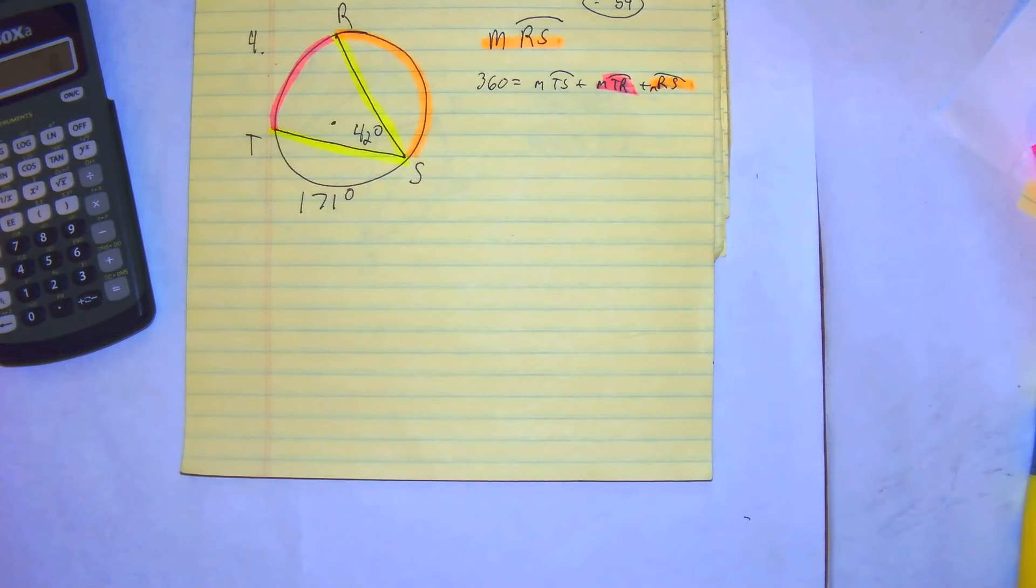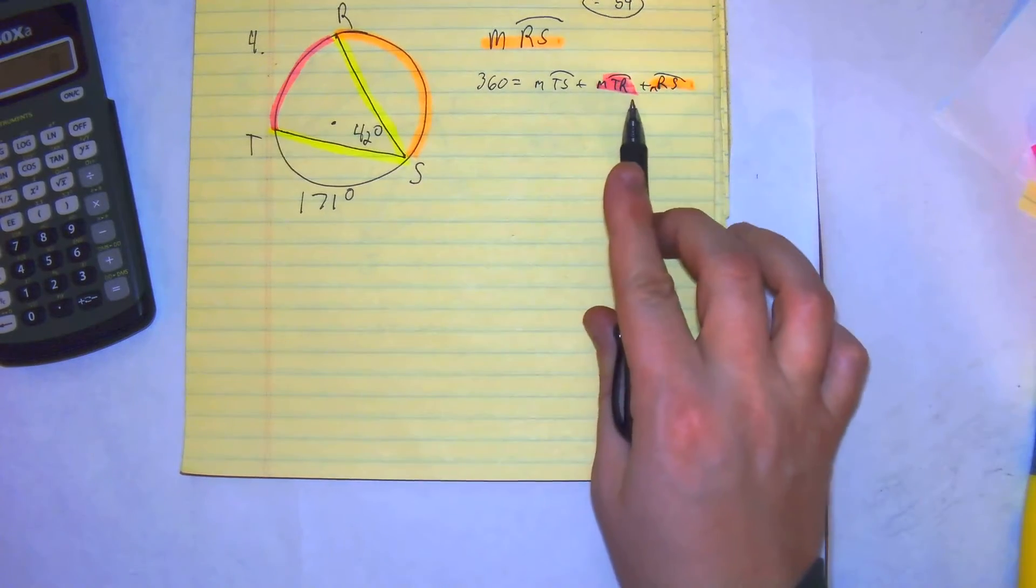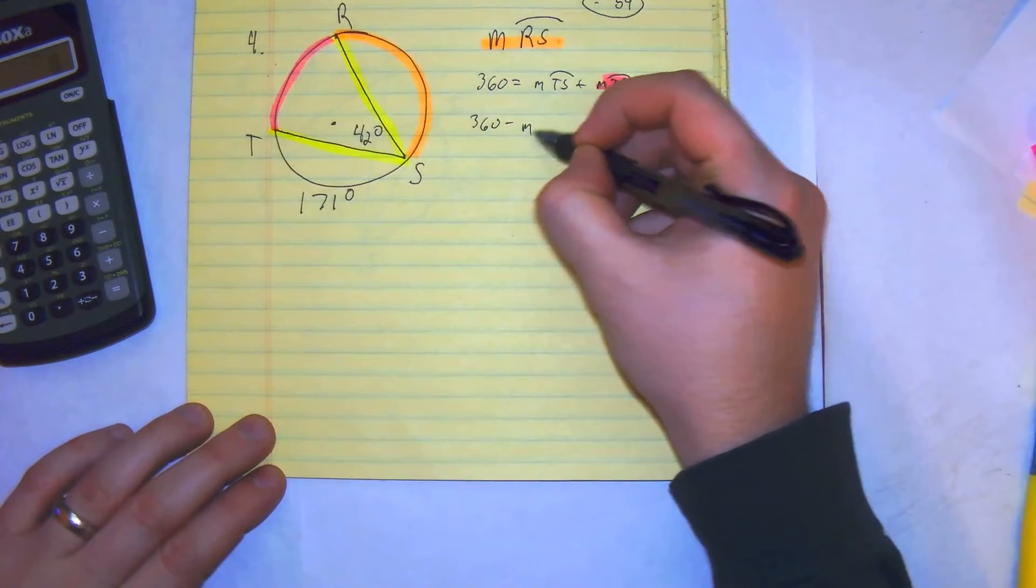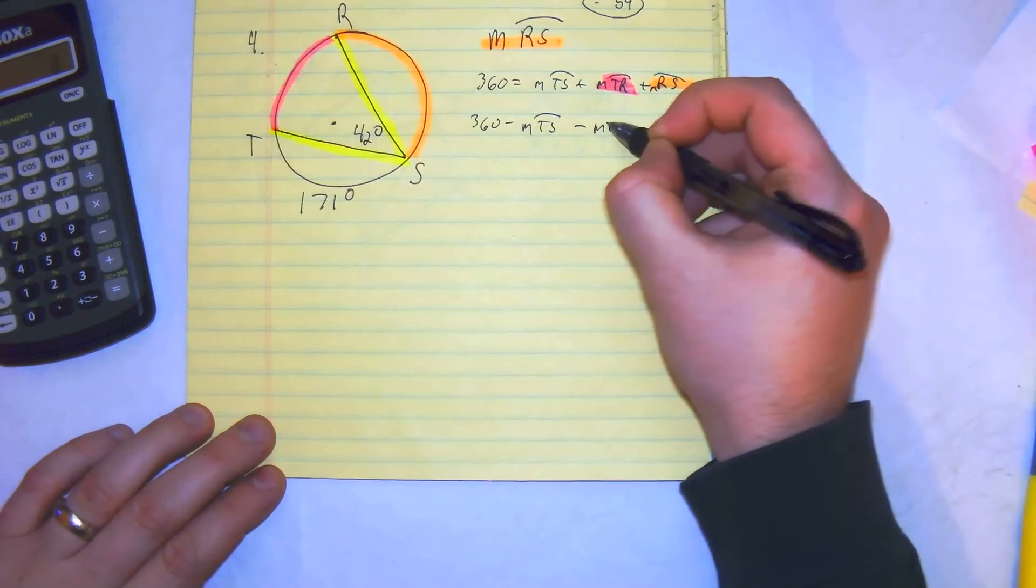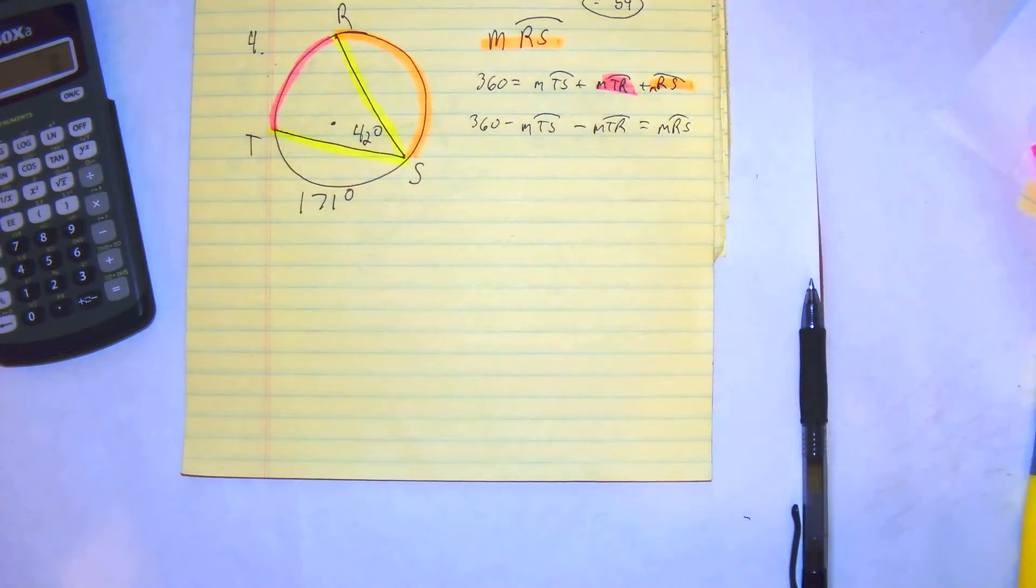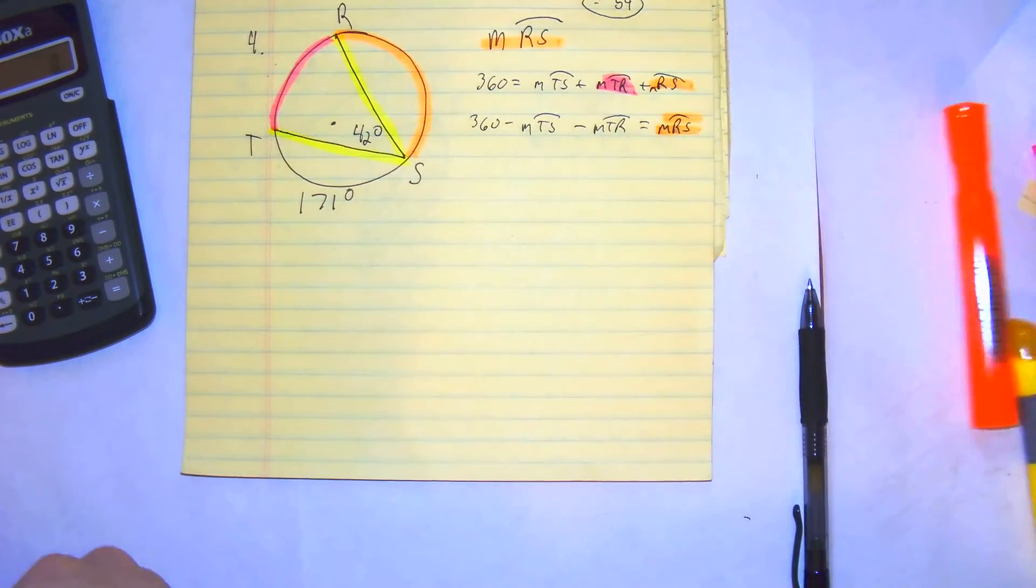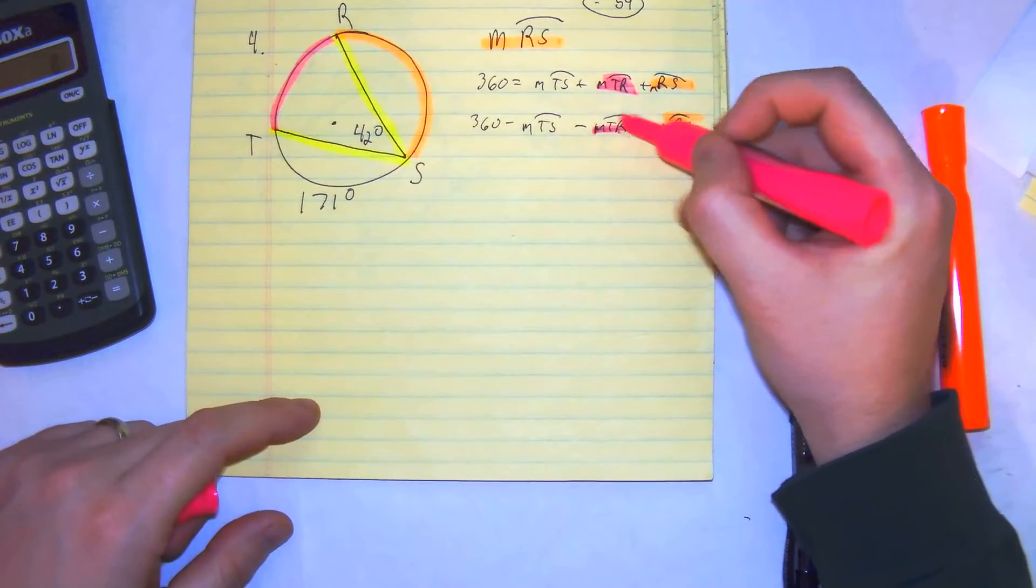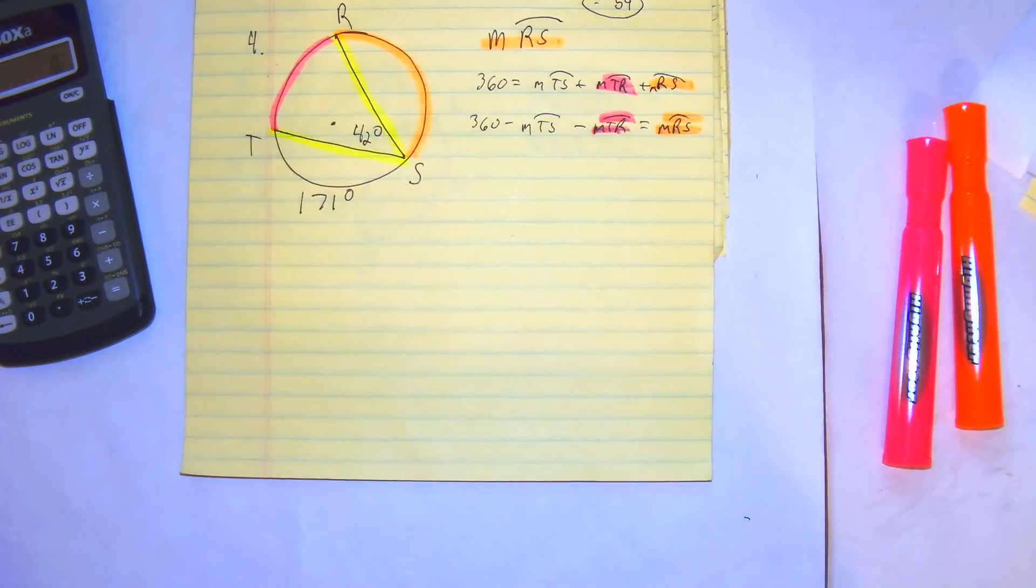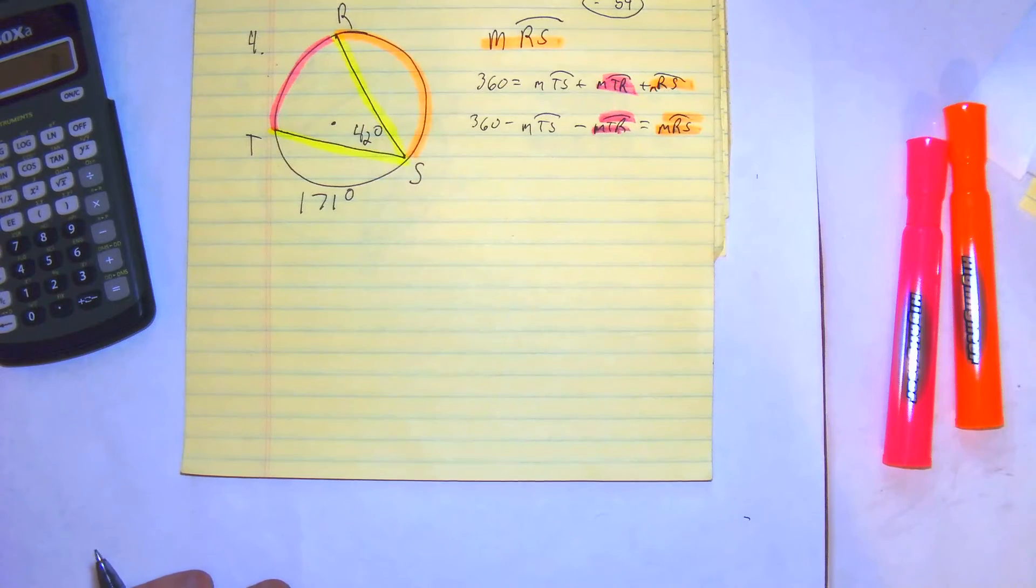And so the way we're going to continue with this is we need to rework this formula. We're finding rs. So our formula would be 360 minus the measurement of ts, minus the measurement of tr, equals the measurement of rs. So this is what we're solving for. This is what we need to find. I'm going to do that over here, and then we'll finish this up over here. This is just showing it algebraically what we're doing.